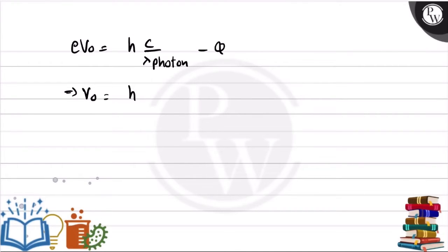Which implies V0 equals hc by e times 1 over lambda of photon minus phi by e.